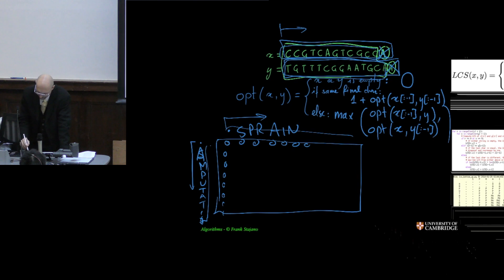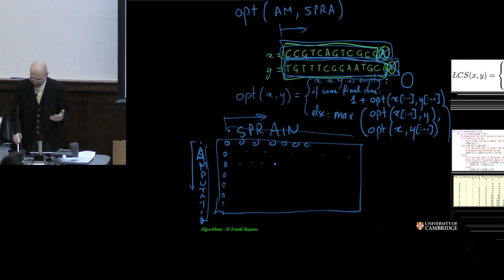And then for anything that's in the middle of this matrix, for example, here, I would have, this is OPT of, this is AM and SPRA. What is the longest common subsequence between AM and SPRA? Well, assuming that I have computed everything as leading up to here, then what I'm going to do is apply this formula and say, are they both empty? No. Is it the same final character? No. So I'm in this else case. So it's going to be the maximum of taking one character off from one string and the other string and one character off, the opposite combination.